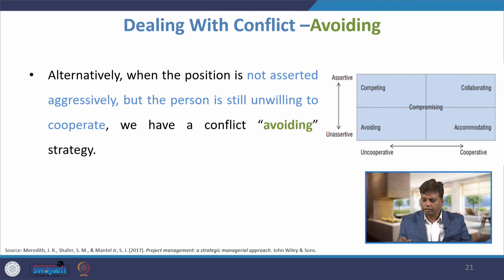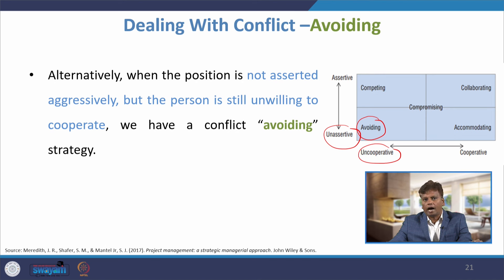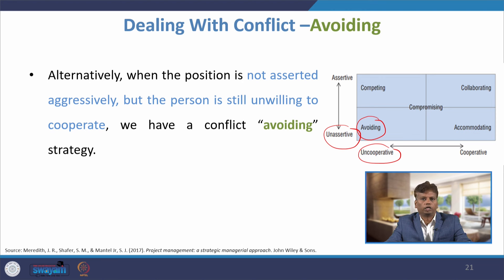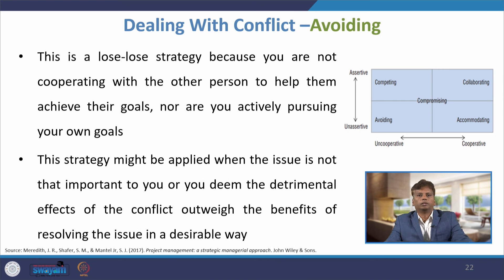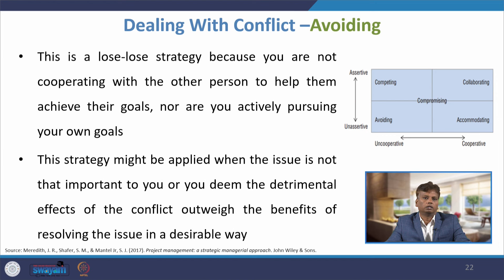The second strategy is avoiding. The person is uncooperative but also unassertive. When the position is not asserted aggressively and the person is still unwilling to cooperate, we have a conflict-avoiding strategy — we avoid the conflict because there would not be any harm. This is a lose-lose strategy because you are not cooperating with the other person to help them achieve their goal, nor are you actively pursuing your own goals. This strategy might be applied when the issue is not that important to you.